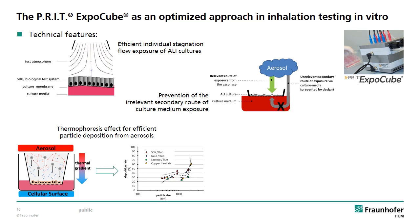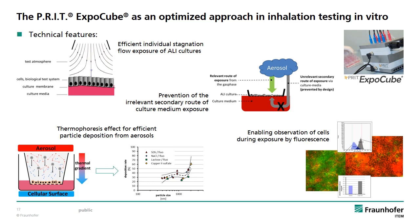By application of a low temperature gradient of 15 degrees centigrade between the aerosol and the exposed cell cultures, it is possible to improve the particle deposition rate to 30% and higher for smaller particle sizes. By principle, this thermal gradient will not affect the cells in any way. Additionally, the ExpoCube offers the unique possibility to combine it with a fluorescence reading system and the exposure effect can be observed non-invasively and online using fluorescence live imaging conditions.